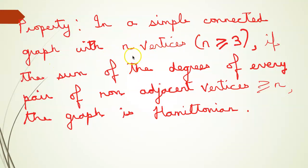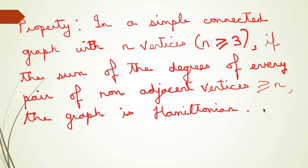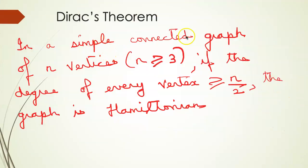In a simple connected graph with n vertices where n is greater than or equal to 3, if the sum of the degrees of every pair of non-adjacent vertices is greater than or equal to n, the graph is Hamiltonian. Based on this, Dirac's theorem states that in a simple connected graph of n vertices where n is greater than or equal to 3, if the degree of every vertex is greater than or equal to n/2, the graph is Hamiltonian.